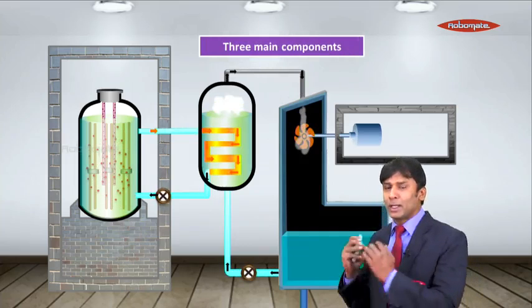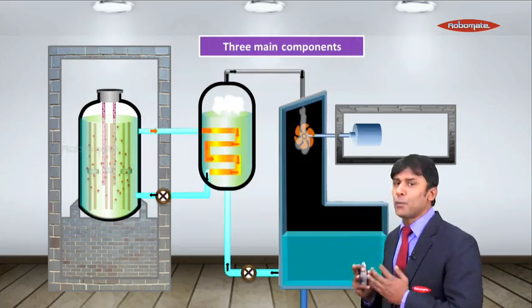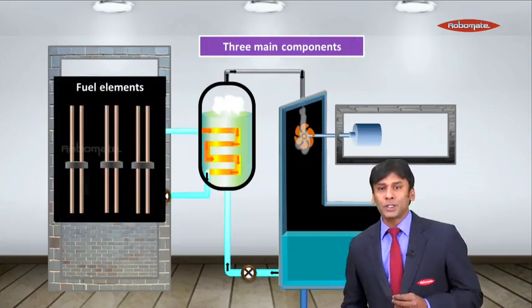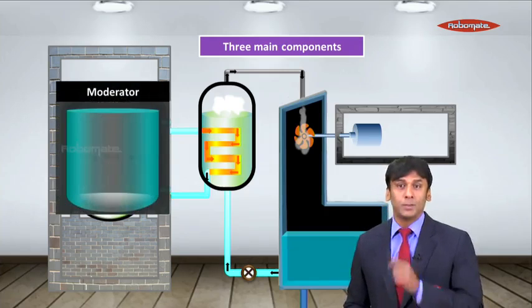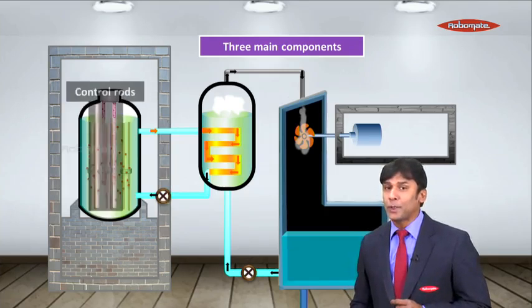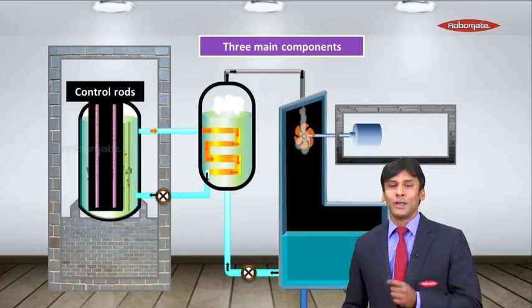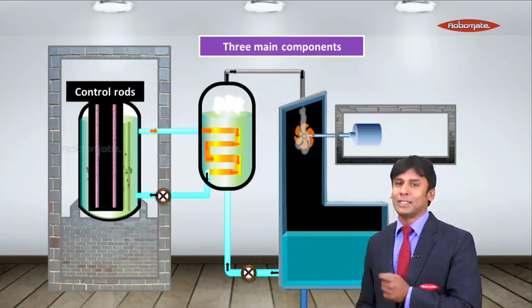Now there are three main components of a nuclear reactor. The first component is a fuel element. The second component is moderator and the third component is control rods. So let us learn each of them in detail.